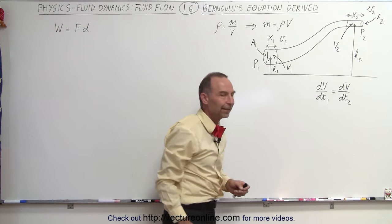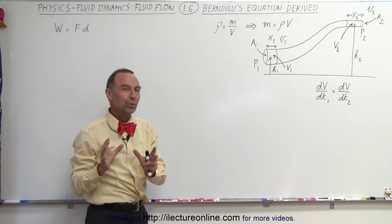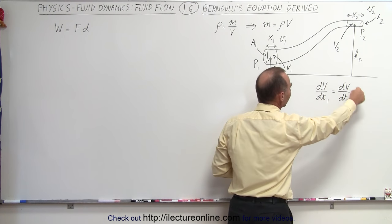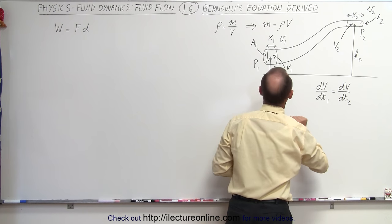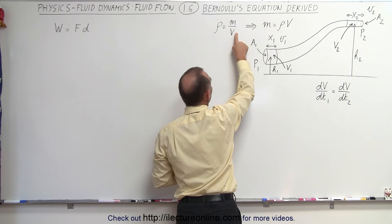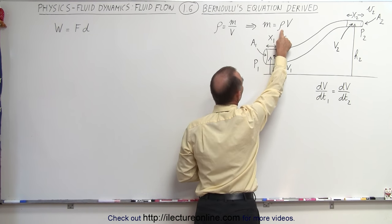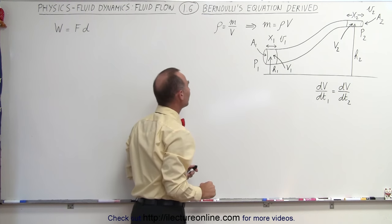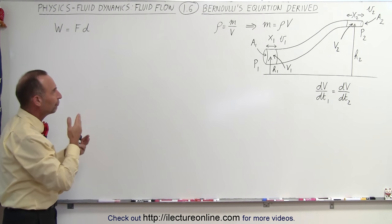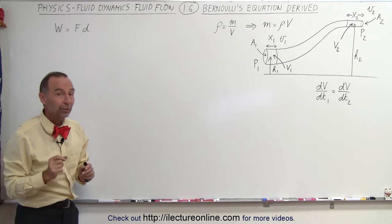To derive Bernoulli's equation, we need three concepts. First, the amount of fluid per unit time flowing through the pipe must be constant. Second, the density of the fluid equals mass divided by volume, meaning the mass of any fluid element equals density times volume. Third, we use the equation for work: work done equals force times distance.